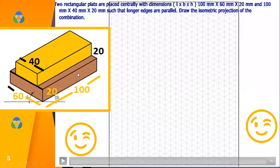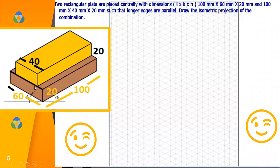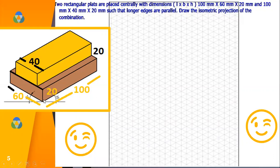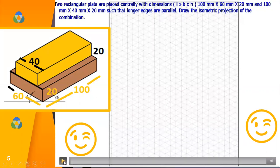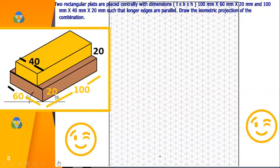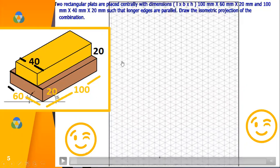So here one rectangular plate is 100 mm, 60, and thickness is 20 mm. The other one is 40, 100 mm, and 20 mm. You need to write the isometric projection of this combination of solids. So take any point on the isometric sheet. This is the isometric sheet.